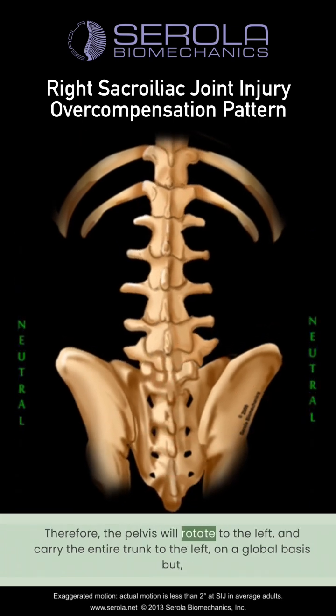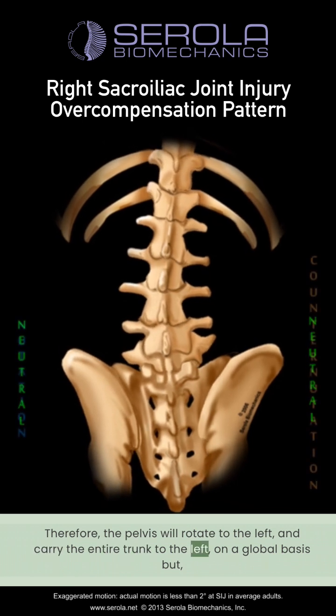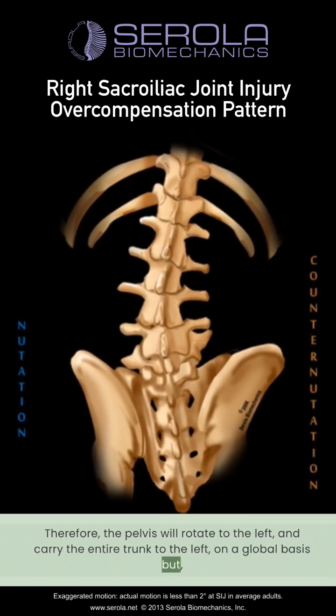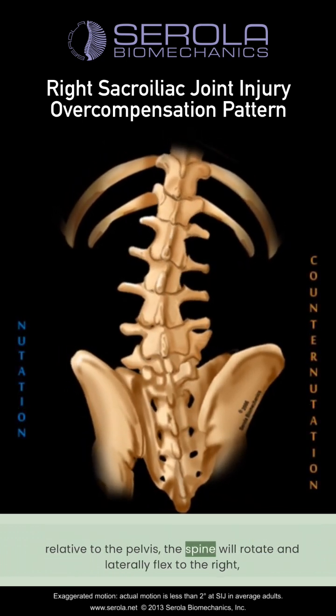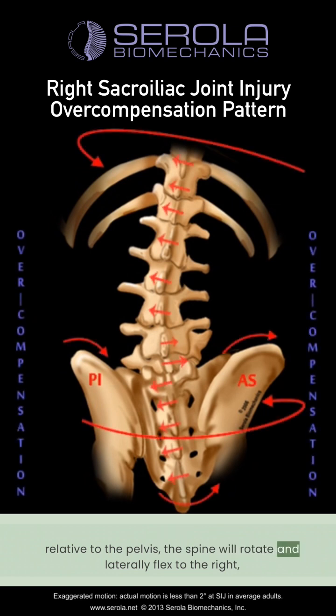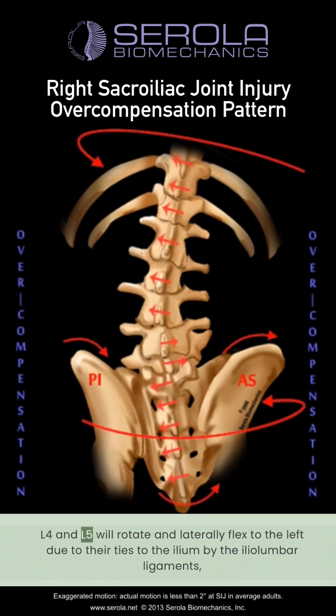Therefore, the pelvis will rotate to the left and carry the entire trunk to the left on a global basis, but relative to the pelvis, the spine will rotate and laterally flex to the right, with two vertebrae as exceptions.